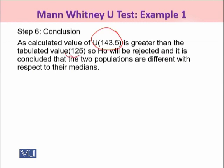As our calculated value of U comes out to be 143.5, it is very much greater than the tabulated value. See, there were two criteria. Your value should be less than 45 or greater than 125, then you reject. So students, if you just observe, it fulfills one criterion. This value 143.5 that you calculated is greater than 125, that means it falls in the rejection region. So H0 will be rejected and it is concluded that the two populations are different with respect to their medians. And if you remember, that was the very claim of the researchers that both the populations are different with respect to their medians. That comes out to be true.